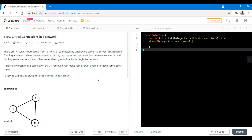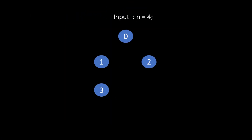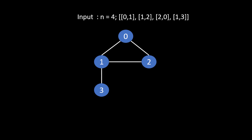Now let's see the question and how we can solve it. With n equals 4, we have 4 servers and their connections: server 0 is connected to server 1, 1 is connected to 2, 0 is connected to 2, and 1 is connected to 3. Note these are undirected connections, so 1,3 or 3,1 is valid movement between these servers.